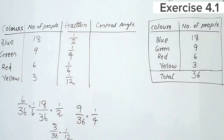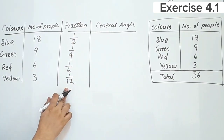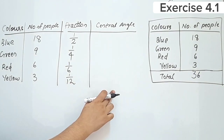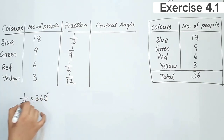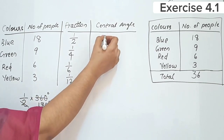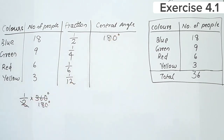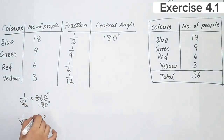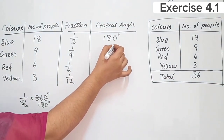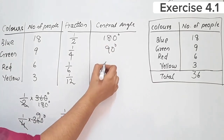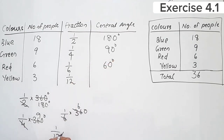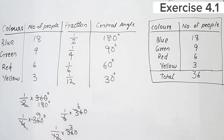Now we calculate the central angles. The central angle is found by multiplying the fraction by 360 degrees. Blue: 1/2 × 360 = 180 degrees. Green: 1/4 × 360 = 90 degrees. Red: 1/6 × 360 = 60 degrees. Yellow: 1/12 × 360 = 30 degrees.